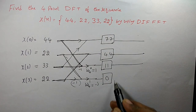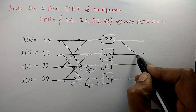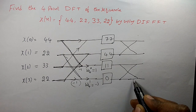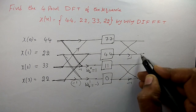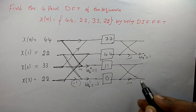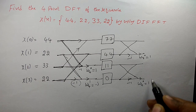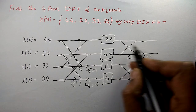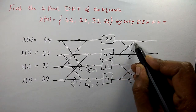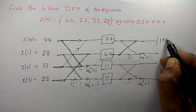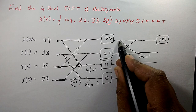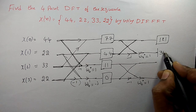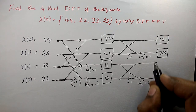The second and last stage in decimation in frequency FFT. Since capital N equals 4 there are only two stages. The twiddle factors for the last stage are Omega_4^0 and Omega_4^0, both equal to 1. For the upper branches: 77 + 44 = 121. And 77 minus 44 = 33, multiplied by Omega_4^0 which is 1, gives 33.